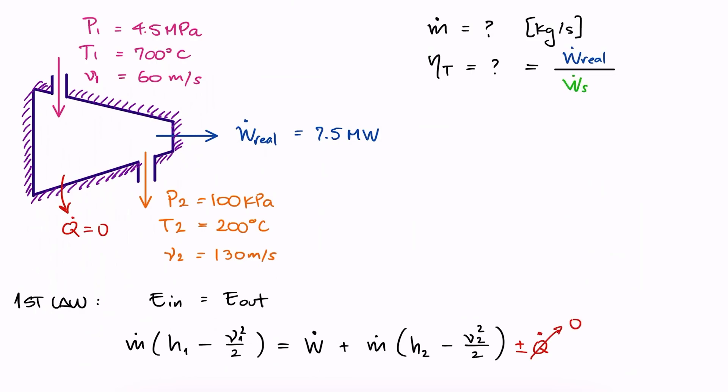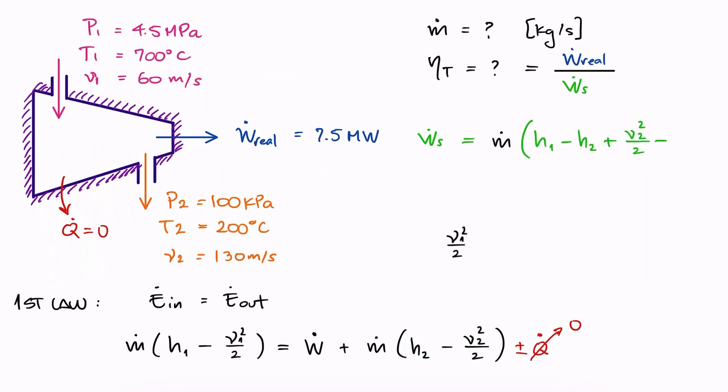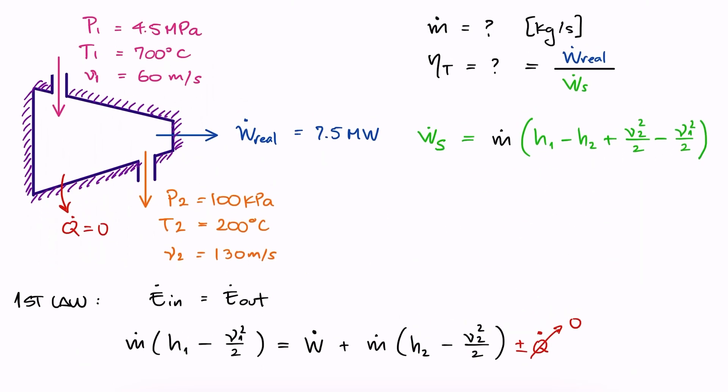Since this is an adiabatic turbine, there is no heat transfer. Therefore, for the isentropic work output, we'll need the enthalpy values, with H2 being that of the isentropic case H2S, the mass flow rate, and because we're actually getting the velocity information, we'll include it here, even though we have already proven that these values are usually negligible. This means that we need to find the mass flow rate first anyways.